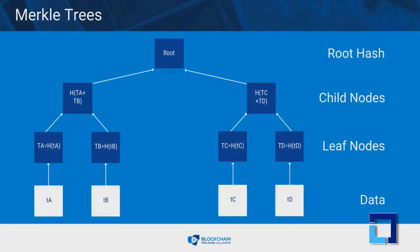Blockchains use Merkle trees for fast and efficient validation of data. Merkle trees summarize the entire set of data in a block by creating a root hash of that data. The root hash is created by repeatedly hashing pairs of child nodes until only one node is left.